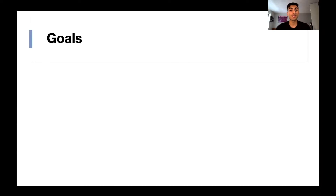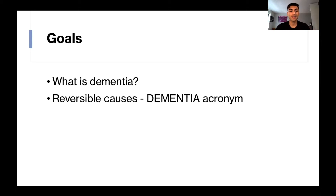So first let's go over the goals of today's lesson. We're first going to talk about what is dementia — so let's define it — and then we're going to go over different reversible causes of dementia using the very appropriate acronym DEMENTIA.